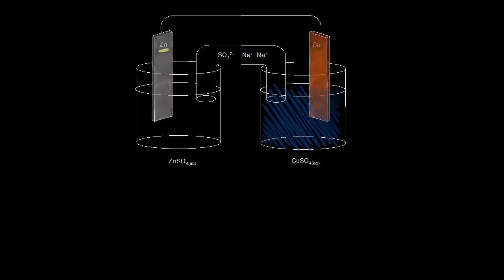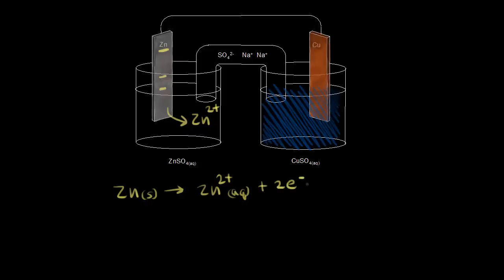Think about an atom of zinc turning into Zn²⁺. The atom would have to lose two electrons, so two electrons are left behind on the zinc electrode. The half reaction is: solid zinc loses two electrons to turn into zinc two plus ions in solution — electrons on the product side. This is our oxidation half reaction, since losing electrons is oxidation.